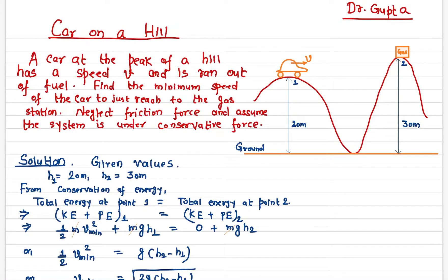If this car does not have any velocity or speed, the maximum height it can reach is to this height. When you release, all the potential energy will change into kinetic energy, and again this kinetic energy will change into potential energy.